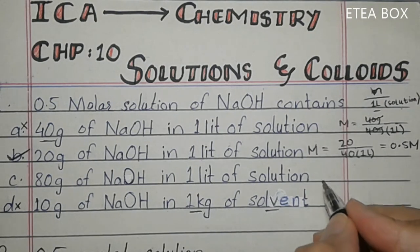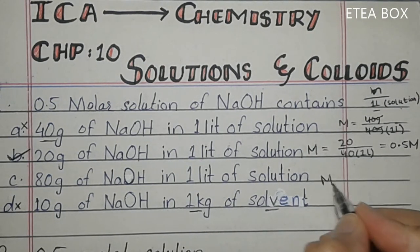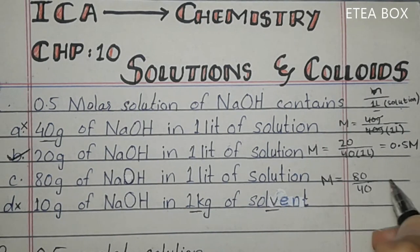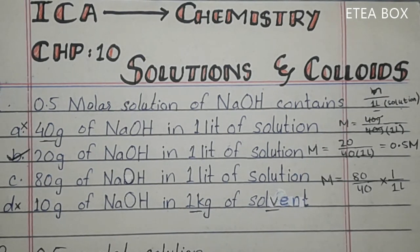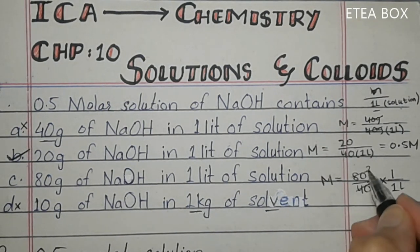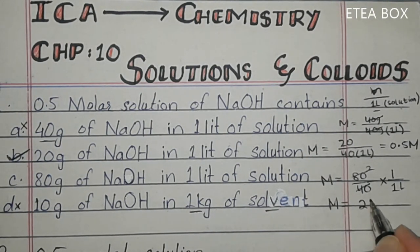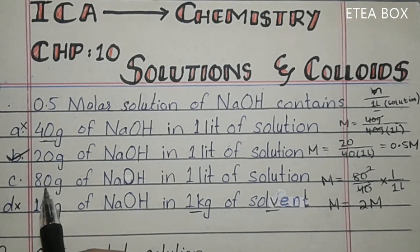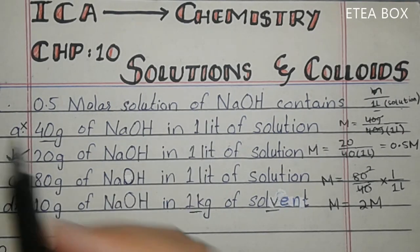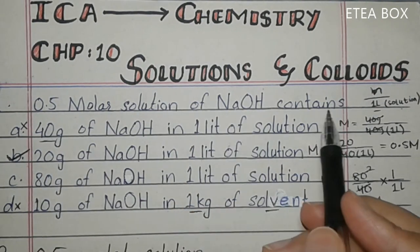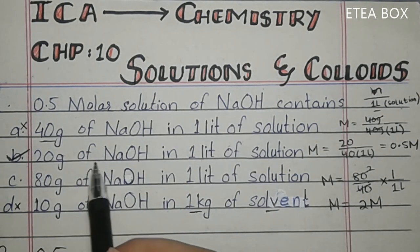Look at option C: 80 gram of NaOH. Molarity: number of moles is 80 divided by 40 = 2, divided by 1 liter gives 2 molar. So option C gives 2 molar solution of NaOH. Option B is correct — 0.5 molar solution of NaOH contains 20 gram of NaOH in 1 liter of solution.